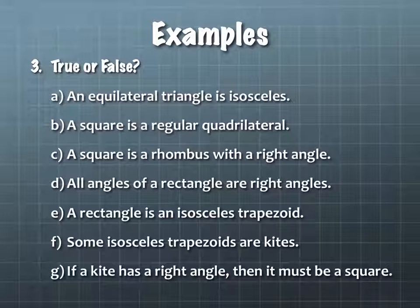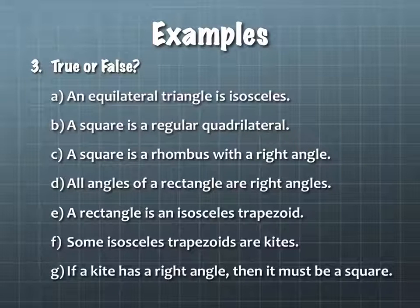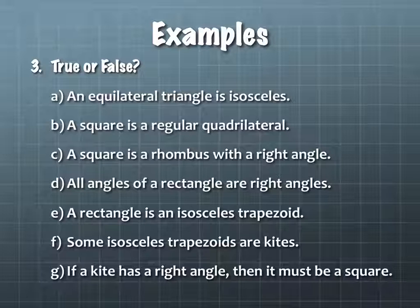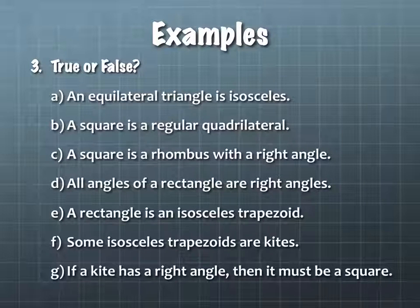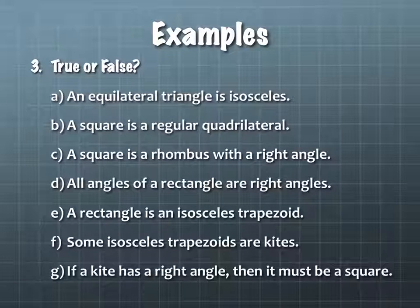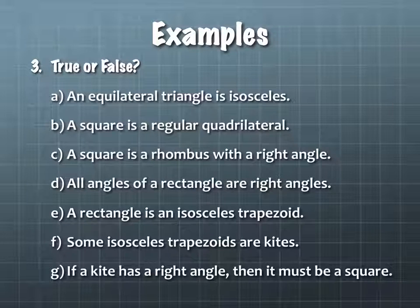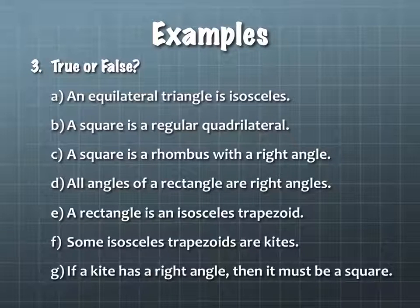We talked about the kite being concave or convex. The other ones can't be concave because of parallel side issues — if you have two parallel sides or one pair of parallel sides, you can't also be concave.